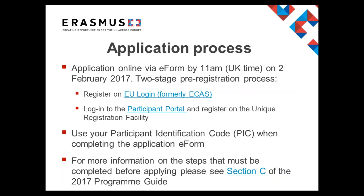If you wish to apply for Erasmus+ funding under this round, you will need to register on EU Login, then log in to the Participant Portal and register your organisation on the Unique Registration Facility (URF). Once you have completed these steps you will have your organisation's Participant Identification Code (PIC), which you will need when completing the e-form. For more information about pre-registering, please see section C of the 2017 Programme Guide.